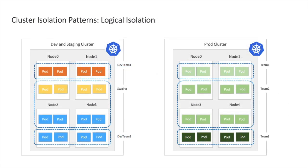The second isolation pattern is logical isolation. In logical isolation, you typically group workloads in clusters based on some commonalities between them, like the environment, the team, or criticality of the workload. In this example, we have two clusters: one cluster for both dev and staging workloads where different teams share the same cluster, and a second cluster dedicated for production workloads with three teams in it. What enables us to divide our clusters in a way that is safe, secure, and efficient?